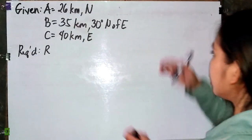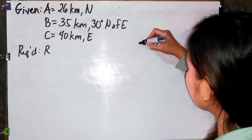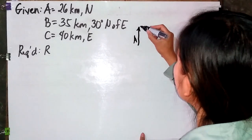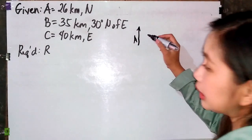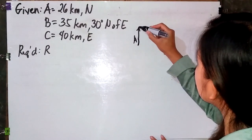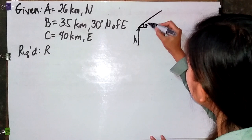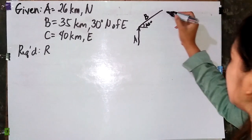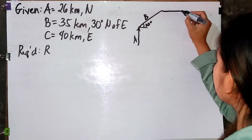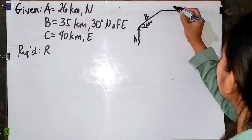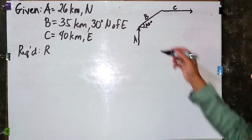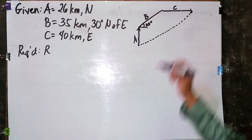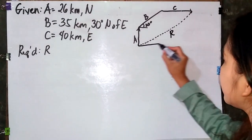Let's illustrate the vectors. Vector A is 26 kilometers north. Vector B is 35 kilometers at 30 degrees north of east. Vector C is 40 kilometers east. To find the resultant, we connect the tail of Vector A to the head of Vector C.